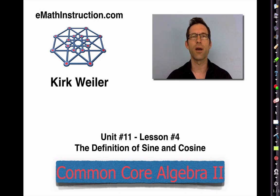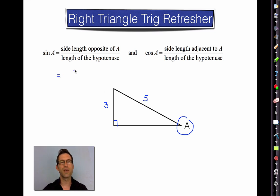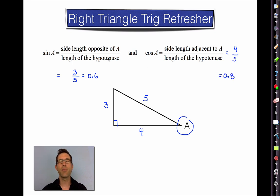So let's first review what you saw in Common Core Geometry — right triangle trig refresher. If I've got a right triangle and one of the acute angles, let's call it angle A, then the sine of angle A is simply the division between the side length opposite of A — let's say that's 3 — and the hypotenuse — let's call that 5. So we would say that the sine of A is the ratio 3/5 or 0.6. The cosine of angle A is the side length adjacent to A — let's call that 4 — divided by the hypotenuse. So that's 4/5 or 0.8. It's a 3-4-5 right triangle.